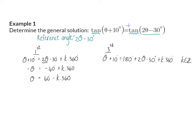Similarly in the third quadrant, collecting all thetas on the left gives minus theta equal to 140 degrees plus k times 360. Dividing by minus one gives theta equal to minus 140 degrees minus k times 360.